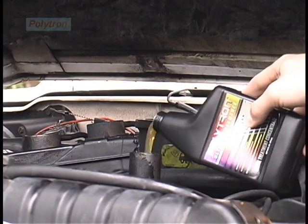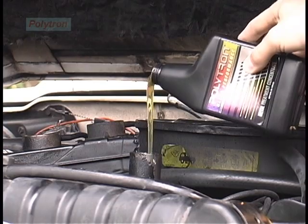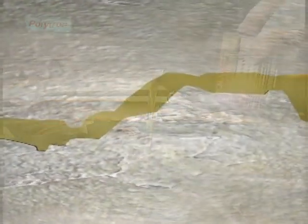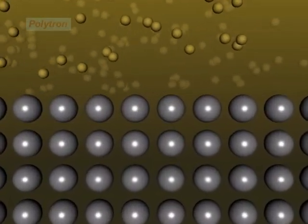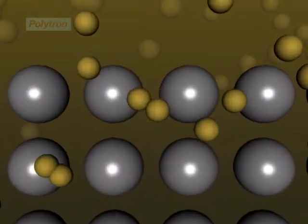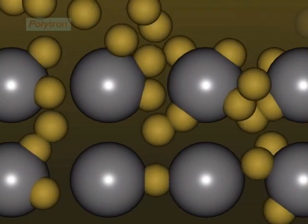When Polytron is applied under heat and pressure generated by friction, some of its elements impregnate metallurgically the crystal structure of the metal itself at its mating friction surface. As a result of the metallurgical process...